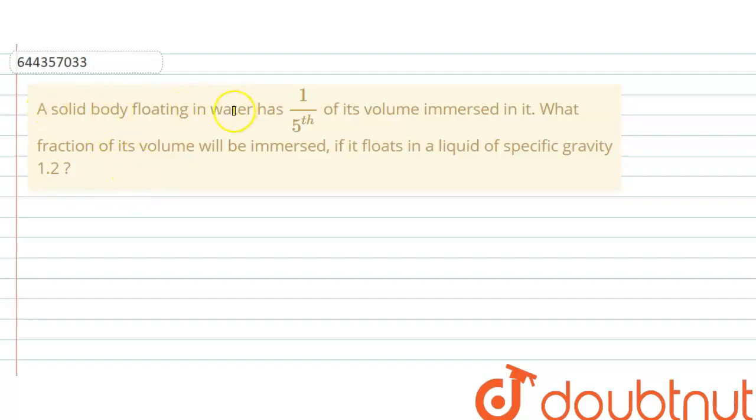A solid body floating in water has one by fifth of its volume immersed in it. What fraction of its volume will be immersed if it floats in a liquid of specific gravity 1.2? Okay, so initially body was floating in water.